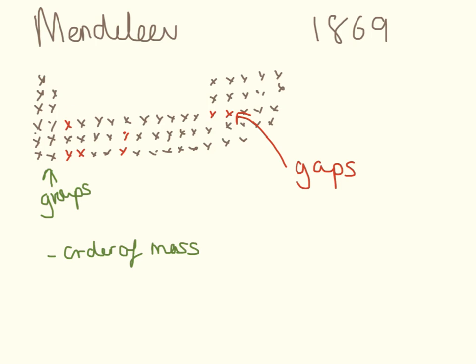And he also left gaps where he thought new elements could be discovered and fit in. A few years later he was proved right when elements were discovered which fit in these gaps and had similar properties to everything else in the table.